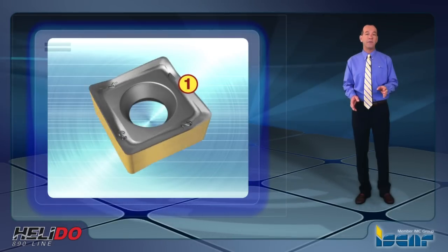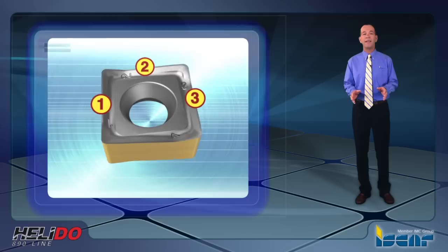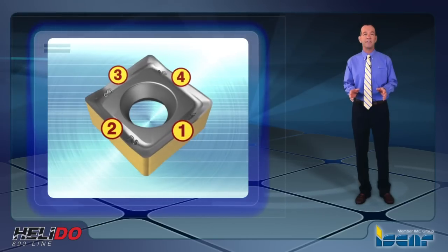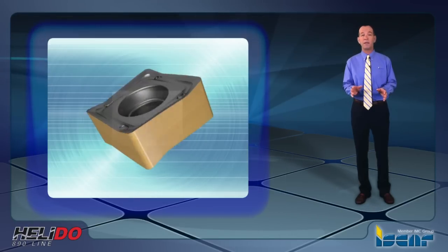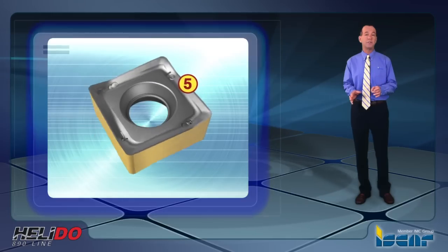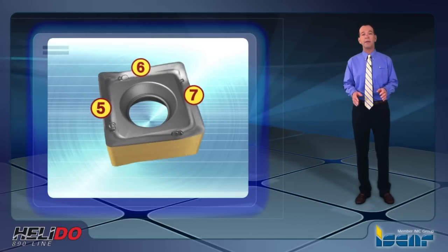The Helidoo S890 FSN is a new family of right-hand indexable face milling cutters intended for rough to semi-finish face milling operations with high efficiency, primarily on cast iron and steel components.